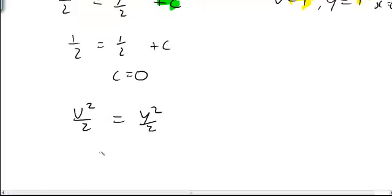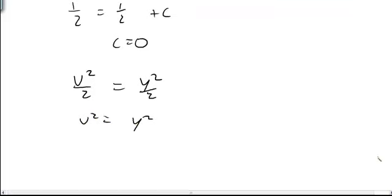Next, we'll multiply both sides by 2, and we get v² is equal to y². Take the square root of both sides, and I get v is equal to plus or minus y.